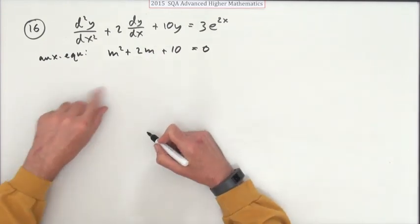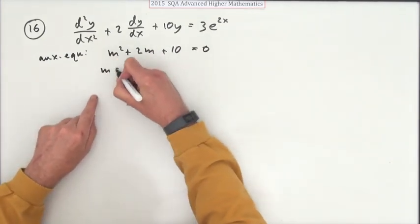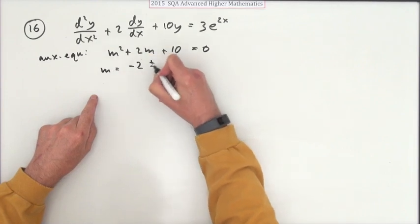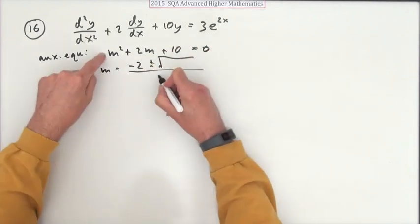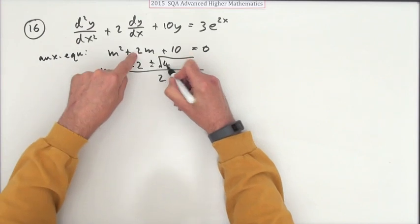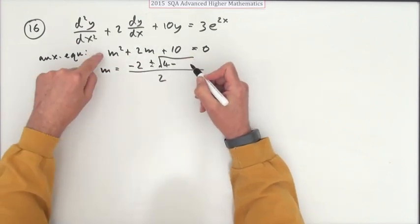So it's going to have to be m equals negative b plus or minus the square root of b² minus 4ac all over 2, and that will be 4 minus 40.